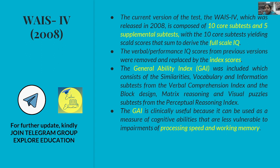In WAIS-4, the Verbal and Performance IQ scores from previous versions were removed. The index scores were revised and updated. A new term was introduced: the General Ability Index, or GAI.